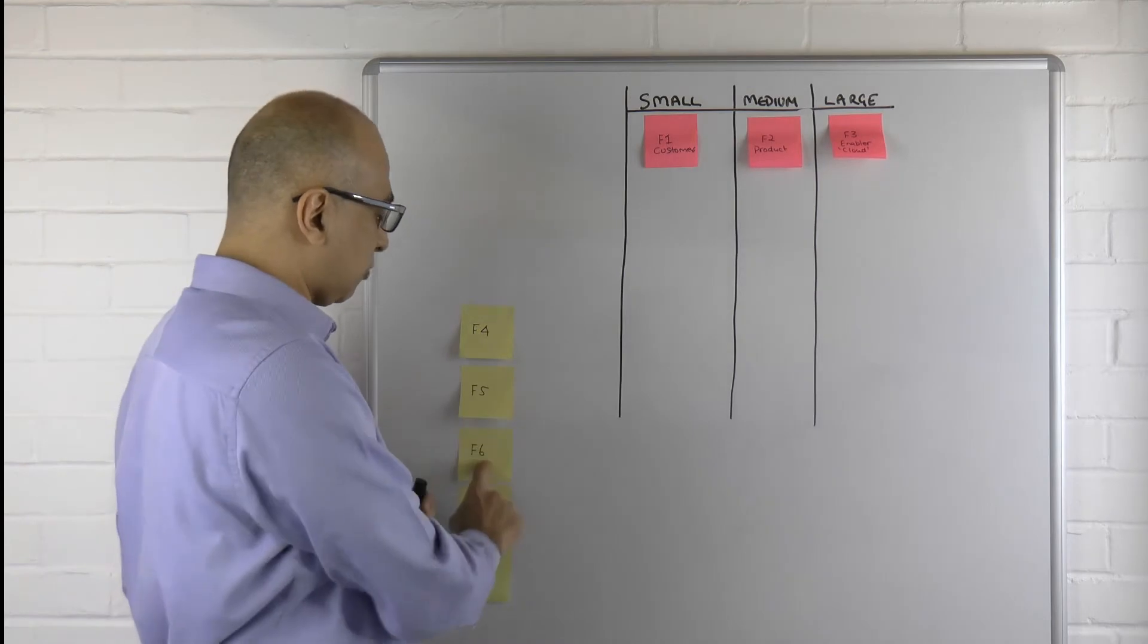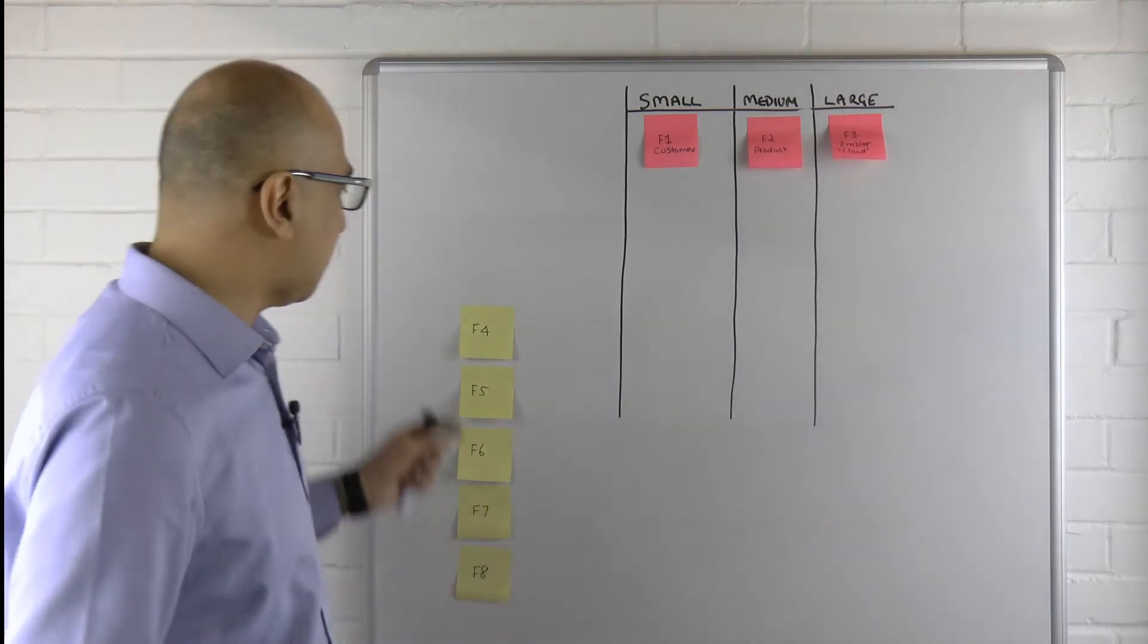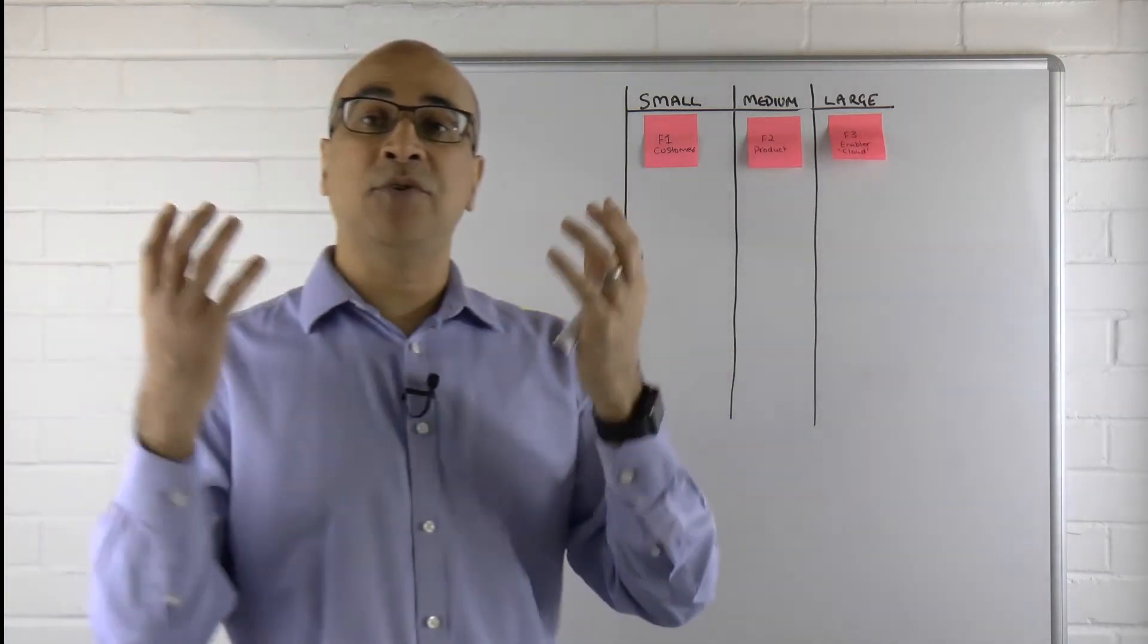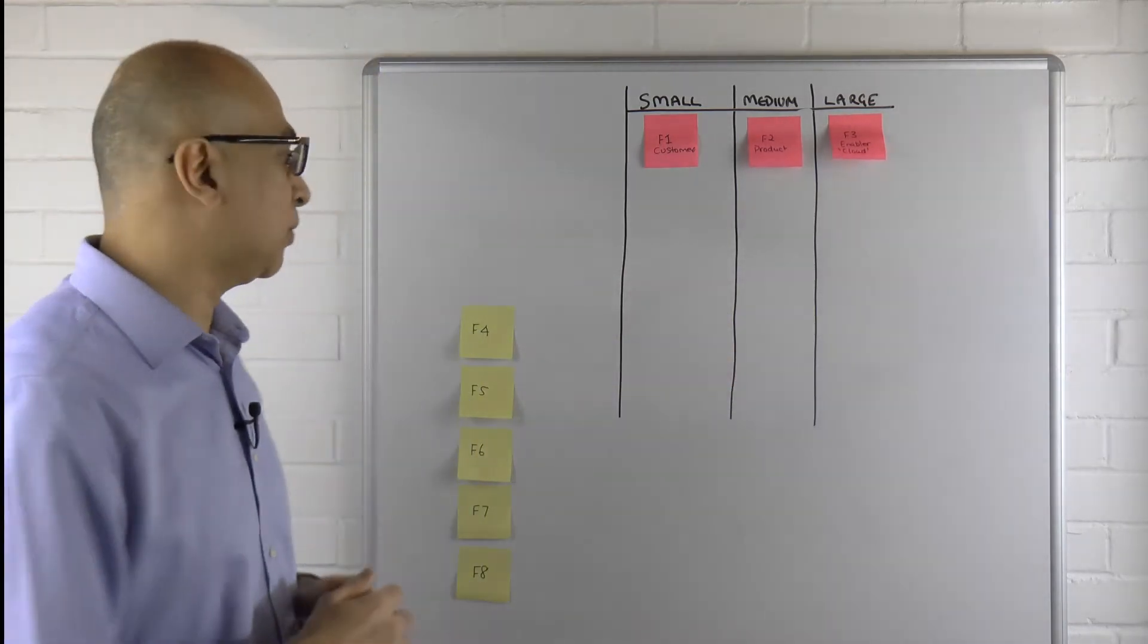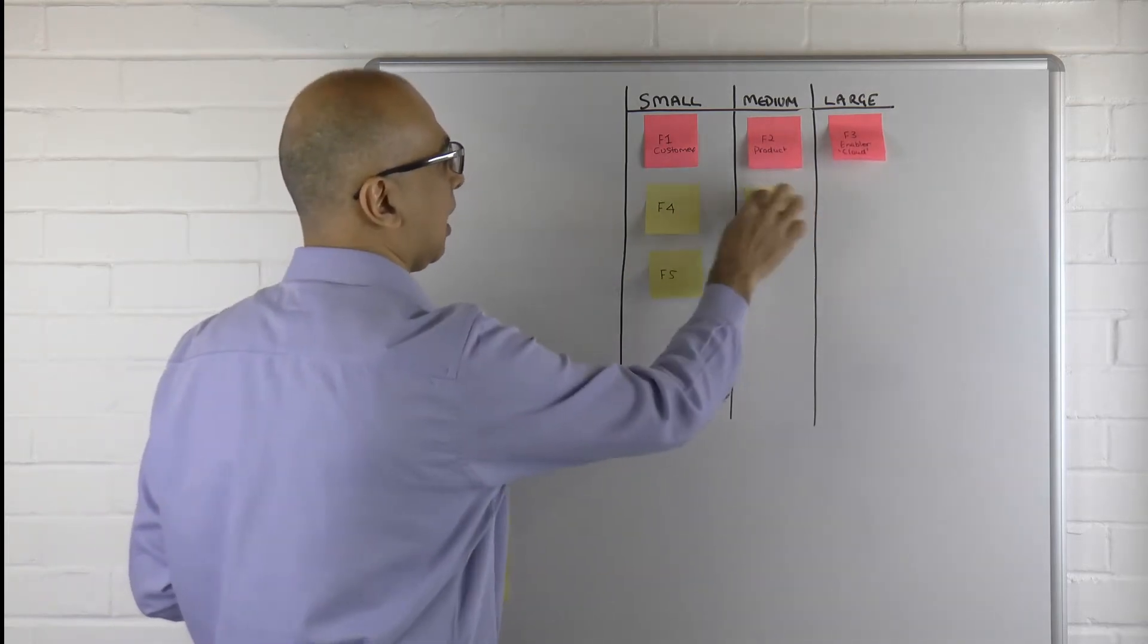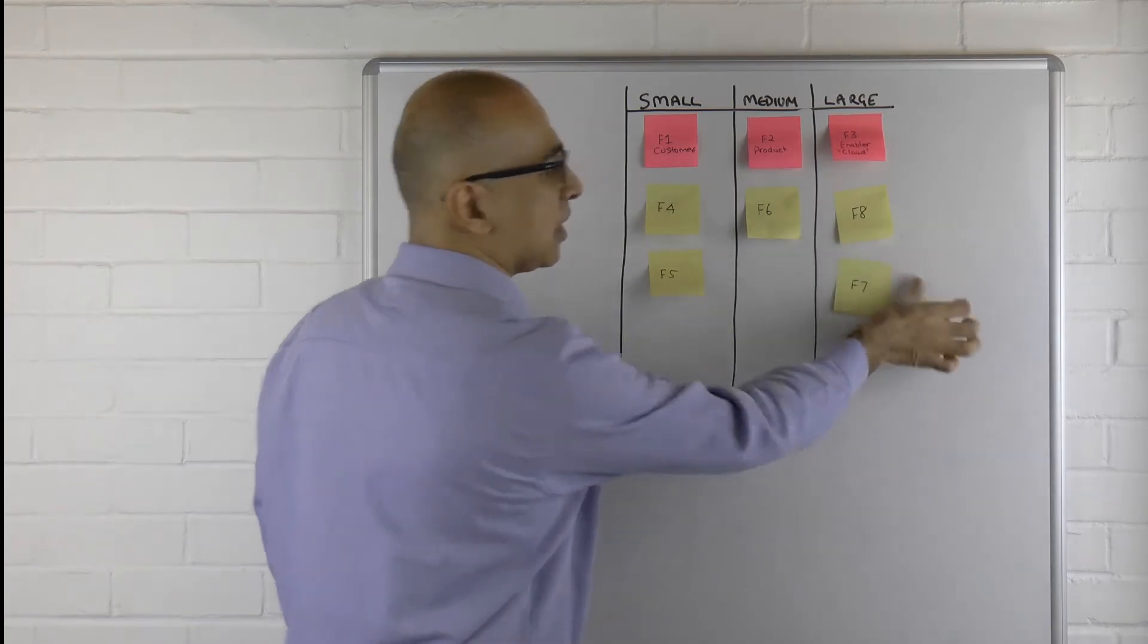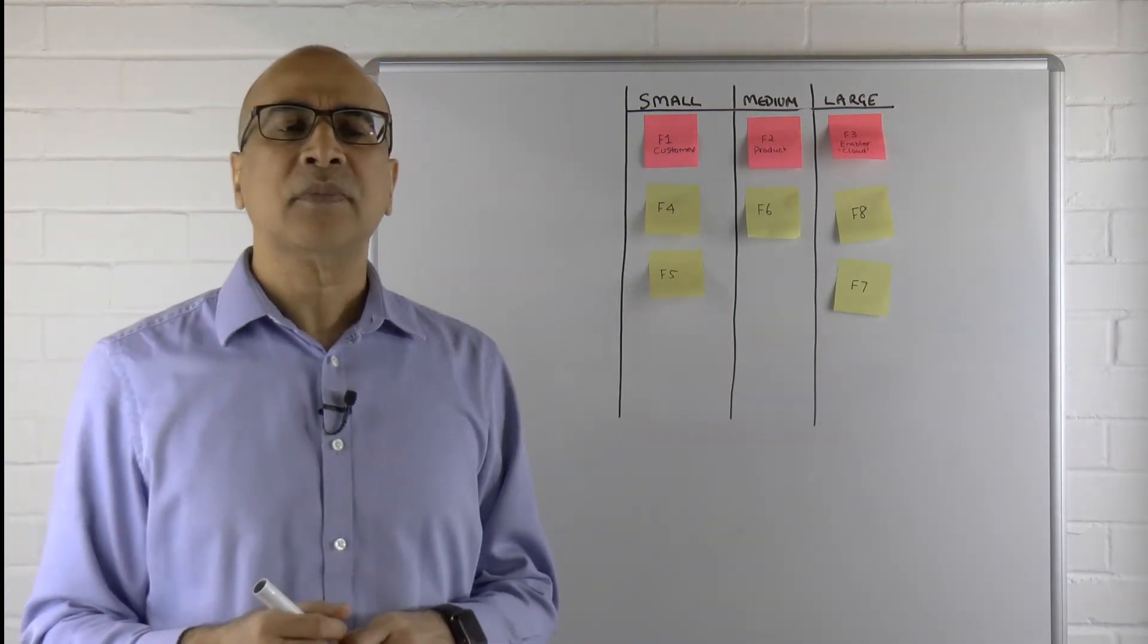Now we understand what these different categories actually mean. What we want to do is take these remaining features, features four to feature eight, and plot them over here with that group of individuals. Let's just say for argument's sake we plot them together and they fall over into something that looks like this.